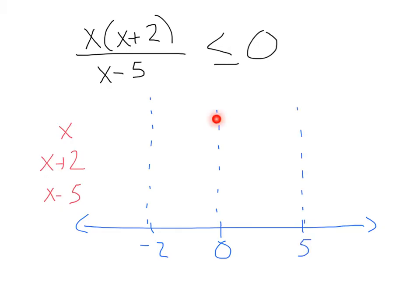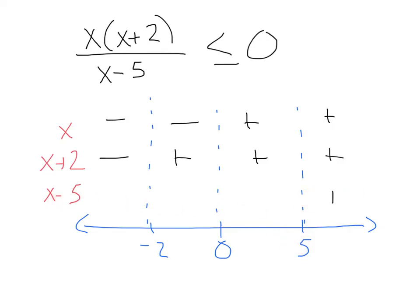For x, everything to the right of zero is going to be positive, and to the left is going to be negative. My x plus 2 has a zero at negative 2 — anything to the right of that will be positive, anything to the left will be negative. And for x minus 5, I have a zero of 5 — to the right will be positive, to the left will be negative.